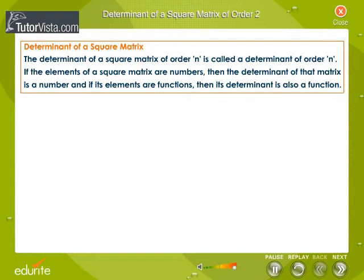If the elements of a square matrix are numbers, then the determinant of that matrix is a number, and if its elements are functions, then its determinant is also a function.